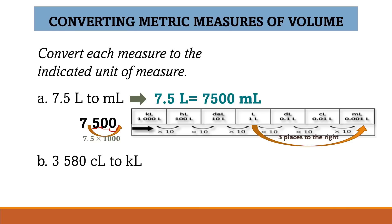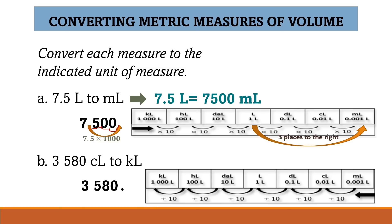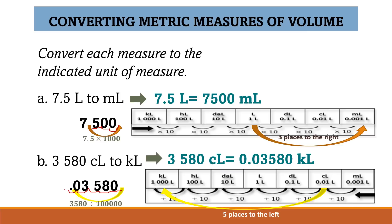For example B, we convert 3,580 centiliters to kiloliters. The decimal point is at the end. From centiliters to kiloliters is 1, 2, 3, 4, 5 — five places to the left. Moving the decimal point five places left and annexing a zero gives us the final answer: 3,580 centiliters equals 0.03580 kiloliters.